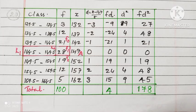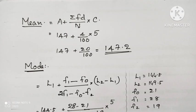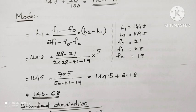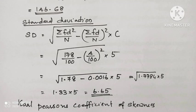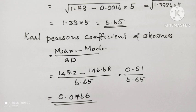For finding all these, we have to make a table like this. By calculation, mean is equal to 147.2, mode is equal to 146.68, standard deviation is equal to 6.65, and Karl Pearson coefficient of skewness is equal to 0.0766.